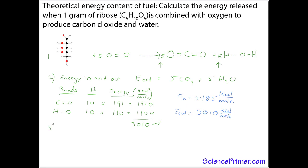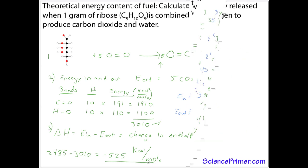Step three is to use energy in and energy out to calculate delta H. So it's energy in minus energy out. And this will equal the change in enthalpy. Or another way to think about this is the change in energy or the energy flow as heat. The heat released from this reaction. So 2,485 minus 3,010 gives us negative 525. So the answer is 525 kilocals per mole. That's the amount of energy released when one mole of ribose is combined with oxygen.